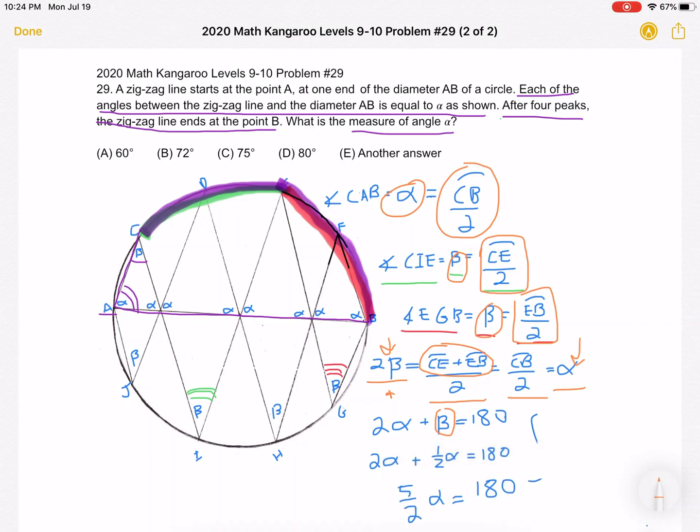We get that 5 over 2 alpha is equal to 180, then we can multiply both sides by 2 over 5 and get that alpha is equal to 360 divided by 5, and then simplifying, alpha is equal to 72 degrees. And that is answer choice B.